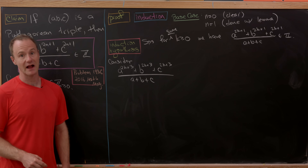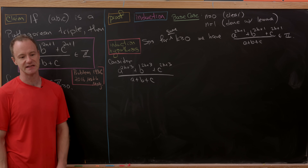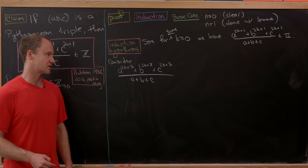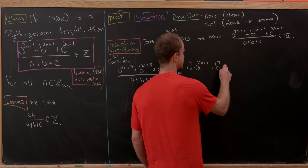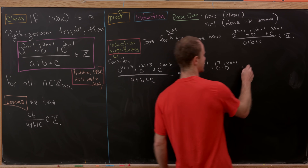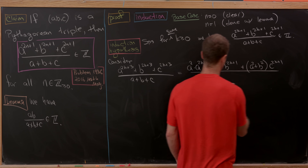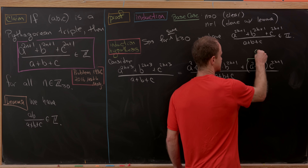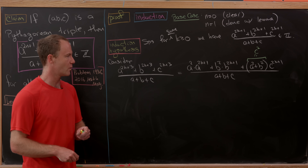Given that we have a Pythagorean triple, we split out a squared from the first term, b squared from the second term, and c squared from the third term. We then use the Pythagorean triple condition to rewrite c squared as a squared plus b squared. So we have: a² times a^(2k+1) plus b² times b^(2k+1) plus (a² + b²) times c^(2k+1), all over (a + b + c).